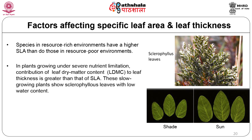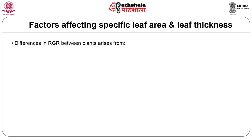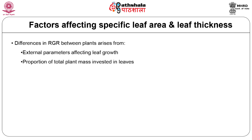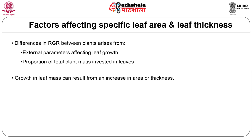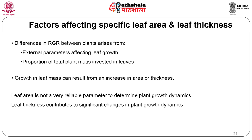Succulent plants in dry subtropical to tropical areas show greater leaf thickness due to higher SLA and low LDMC. In species growing in deeply shaded, nutrient-rich areas like Oxalis, SLA contributes more to leaf thickness than LDMC. Differences in RGR between plants are very sensitive to variations in parameters related to leaf growth and the proportion of total plant mass invested in leaves. Small changes in leaf thickening can contribute to significant changes in plant growth.